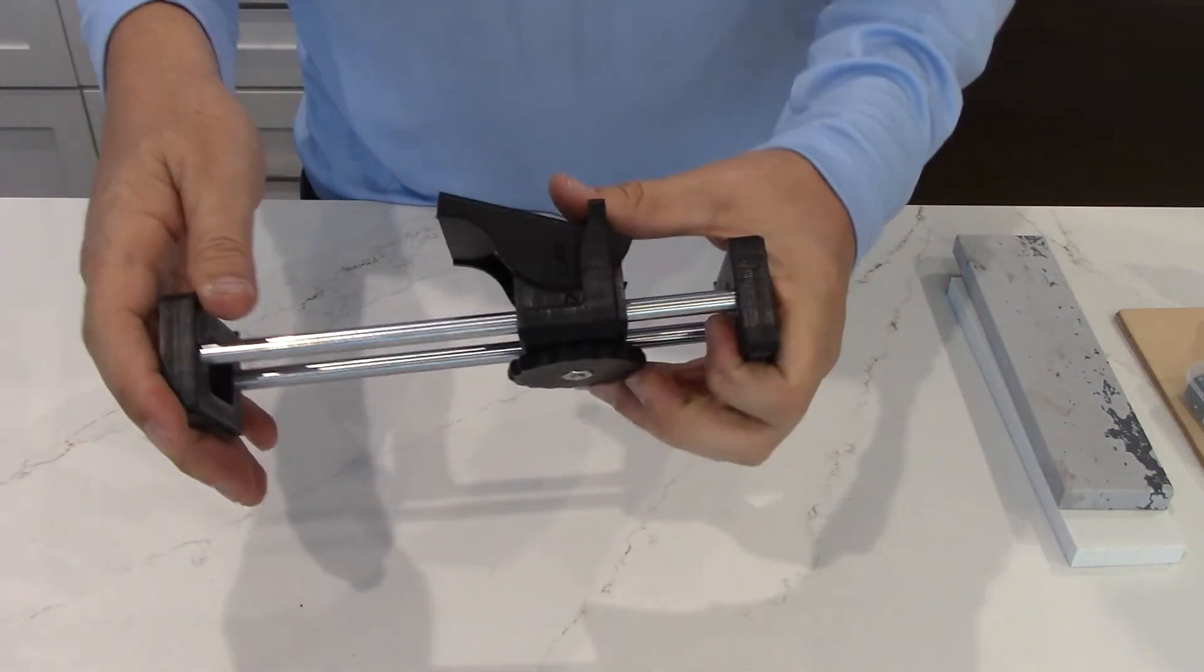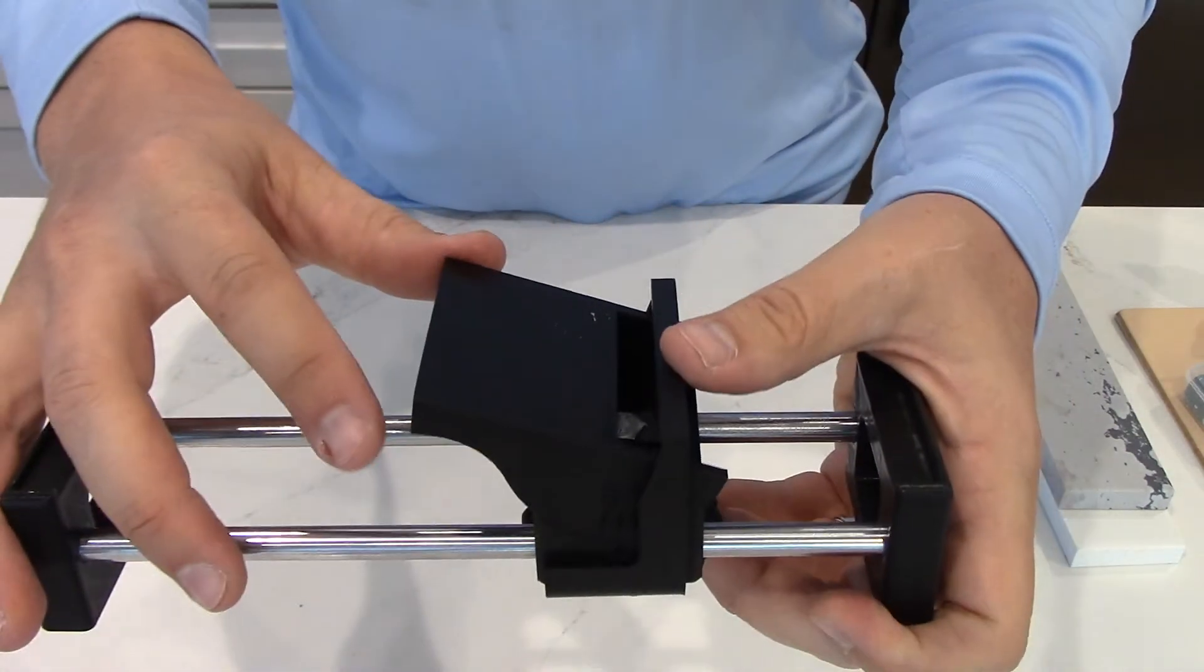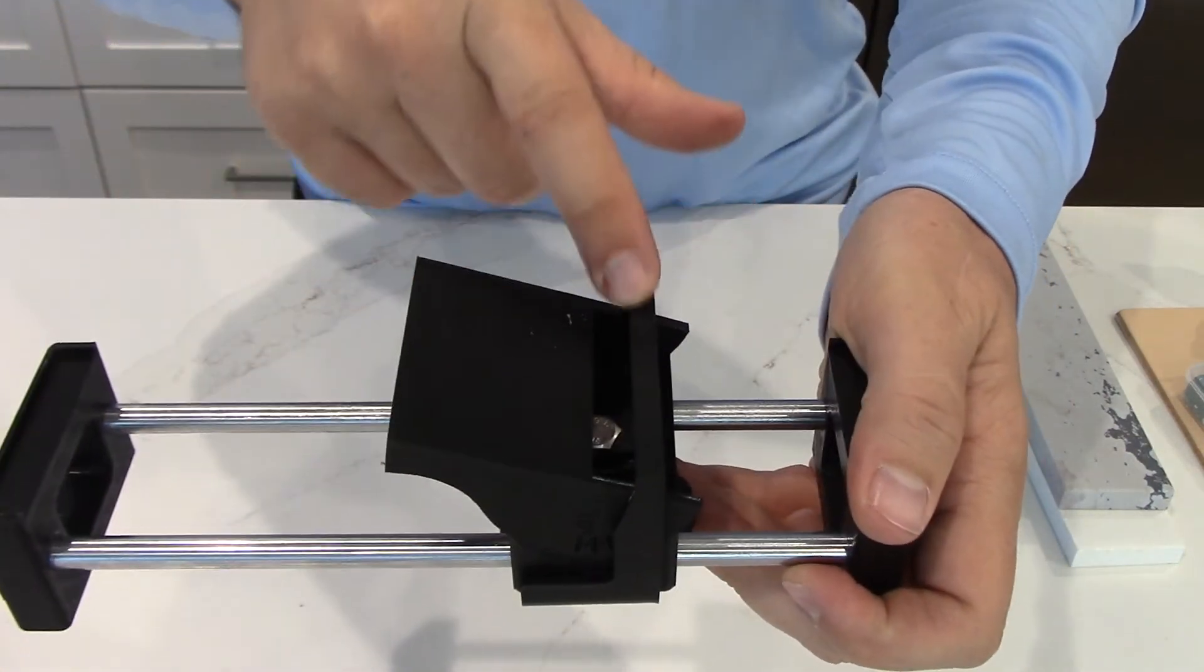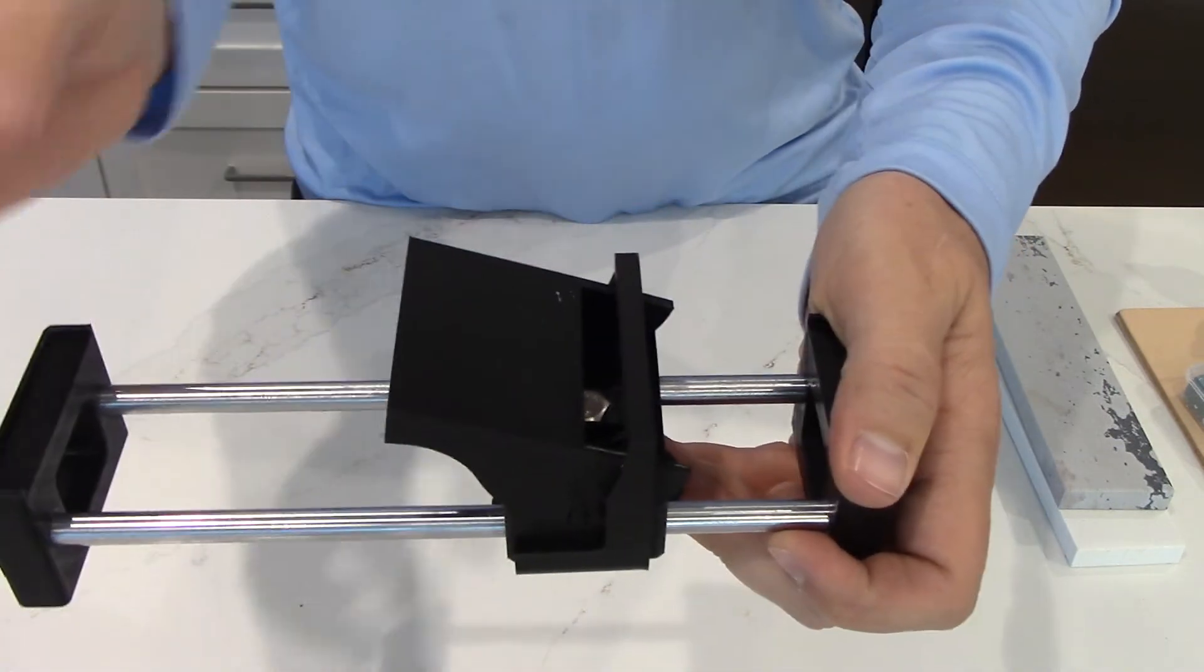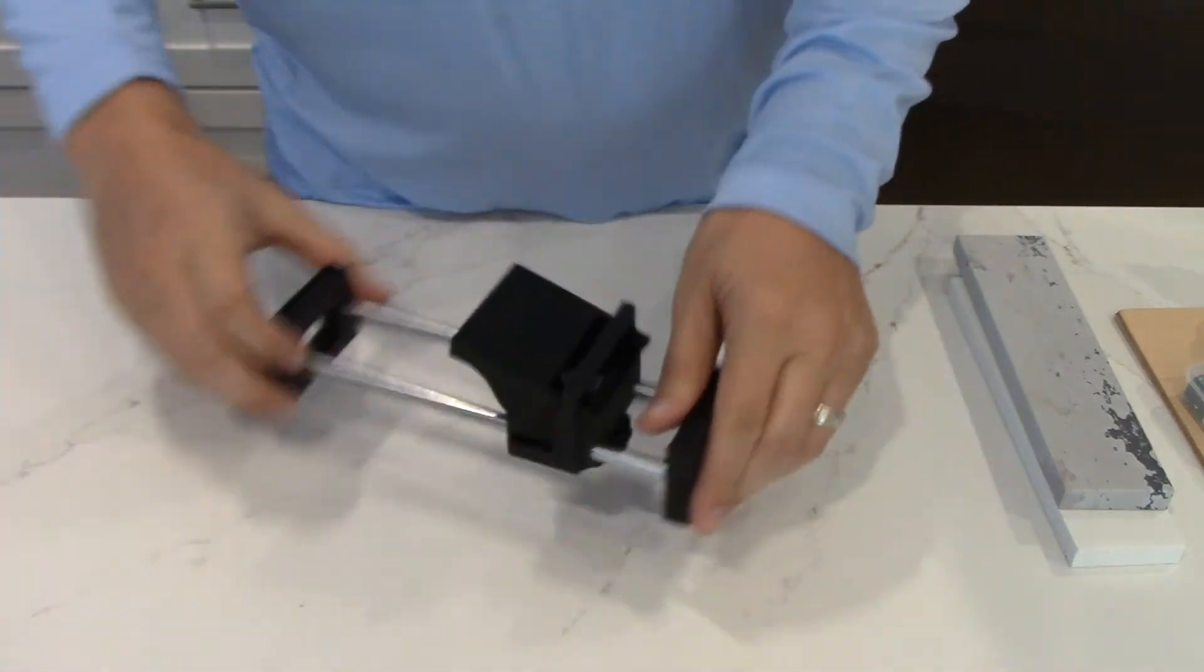There's also now a gate. You can kind of see it here, and that prevents your knife from sliding forward. It's removable and also adjustable. So let me show you how it works.